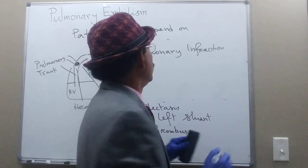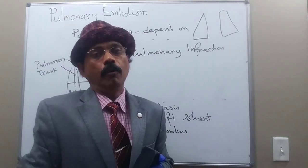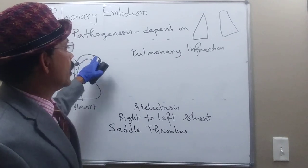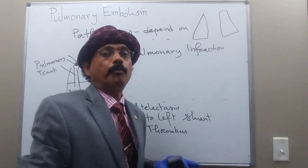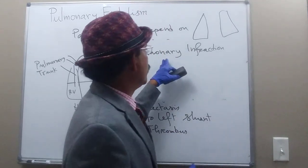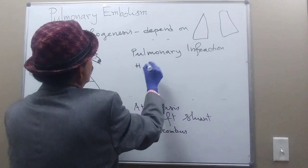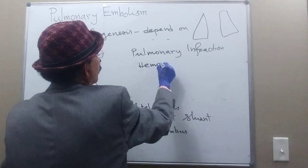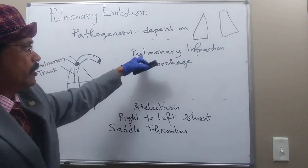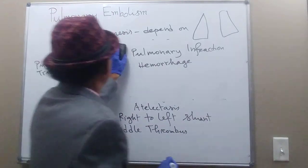Pulmonary infarction occurs in 10–15% of cases but does not usually happen because the lung has blood supply from both the pulmonary artery and the bronchial artery. Pulmonary infarction may occur if a medium-size branch of the pulmonary artery is blocked, especially in persons with ischemic heart disease, and that may lead to hemoptysis — coughing up blood.